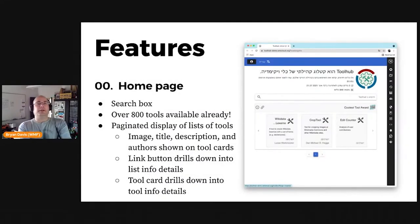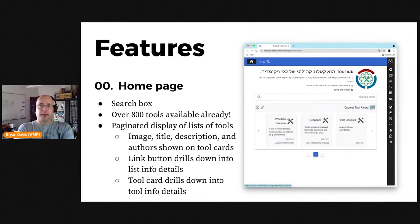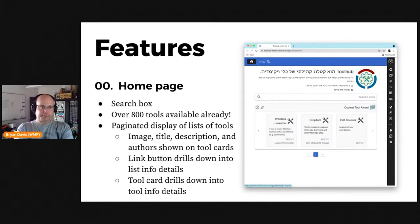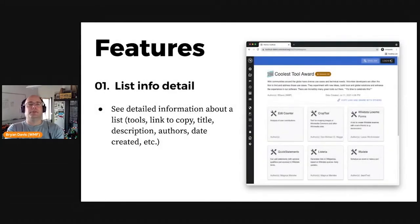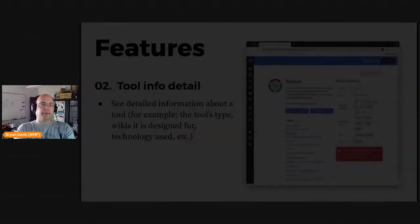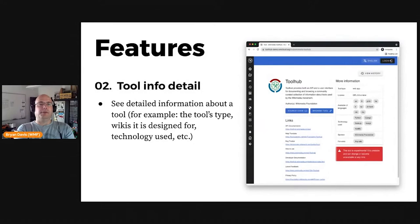I'd now like to quickly show you some screenshots taken from the Toolhub demo server, to give you an idea of what the screens allow you to do. This shot is of the homepage, which gives access to Toolhub's full-text search feature. It also displays featured lists of tools which have been curated by the community. Both the search results and lists will show info cards providing summary information about tools. Tools have detailed pages, which also allow you to share deep links to them from outside of Toolhub.